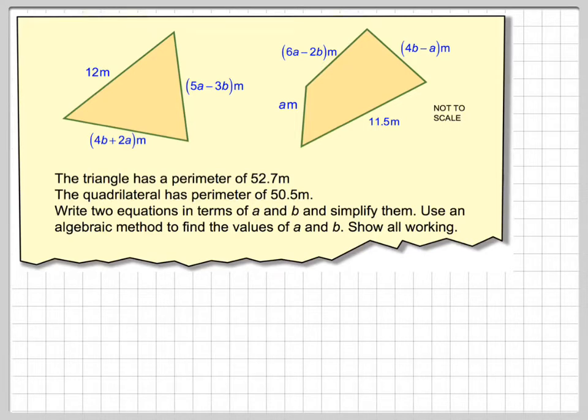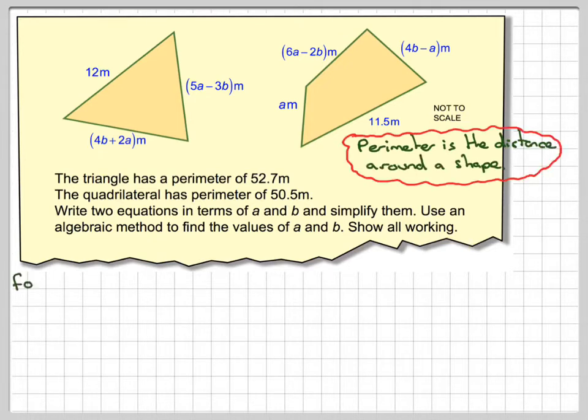We're going to form and solve simultaneous equations. For the triangle, we just need to start somewhere. Perimeter is the distance around the outside of the shape, so we've got expressions for each side.